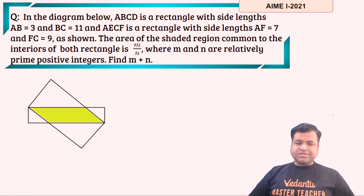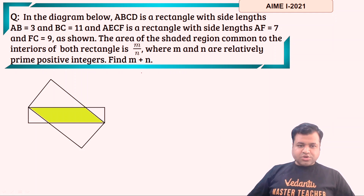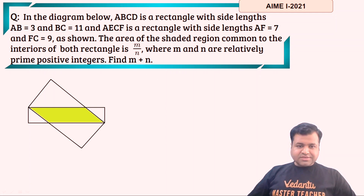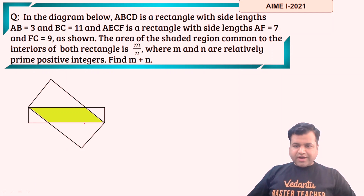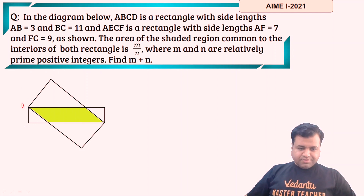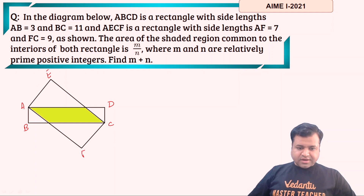This is the first question of today's session. The question is from geometry and it is from the first attempt of 2021. The question says that in the diagram below, ABCD is a rectangle with side lengths AB = 3, BC = 11, and AECF is a rectangle whose side lengths are 7 and 9. We need to find the area of the shaded region. Let's name the points A, B, C, D — this is a rectangle — and AECF is another rectangle.